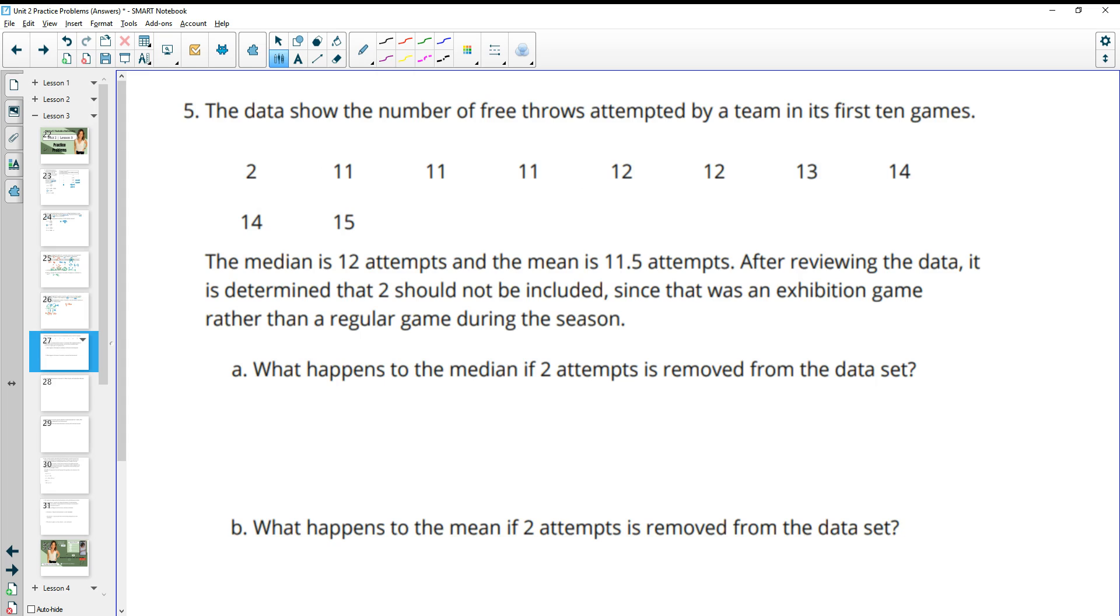Number five, the data shows the number of free throws attempted by a team in its first 10 games. The median is 12 attempts, and the mean is 11.5. After reviewing the data, it's determined that the two should not be included since it was an exhibition game rather than during the regular season. So what happens to the median if the two is removed? So now we only have nine data points. So the middle one is going to be the fifth. That will give us four below it and four above it. So the median stays the same. The median is still 12.